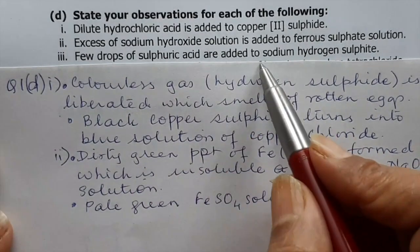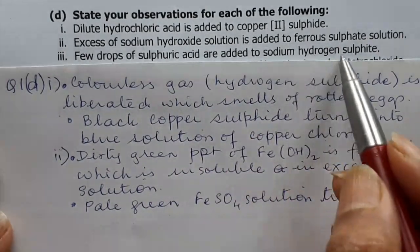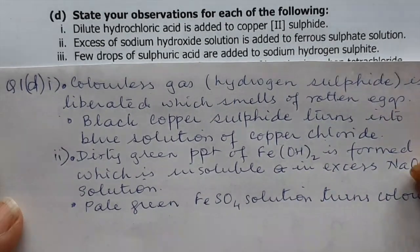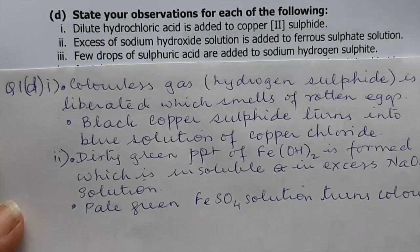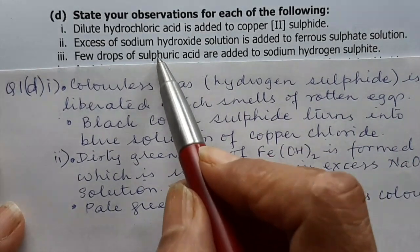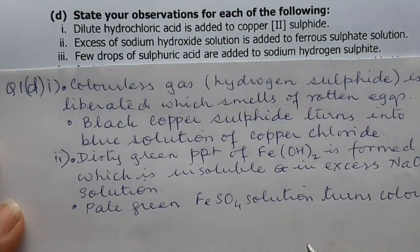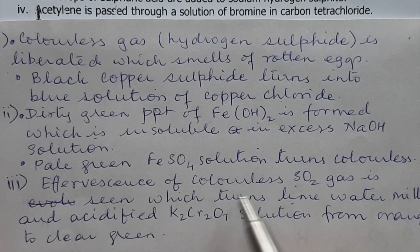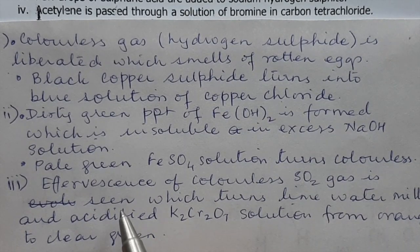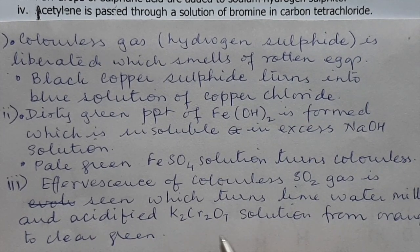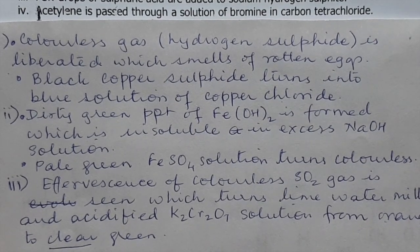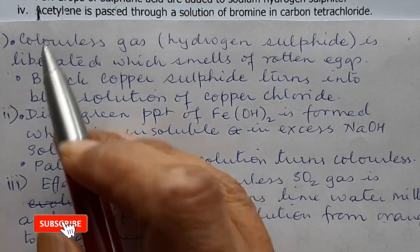(iii) A few drops of sulfuric acid are added slowly to sodium hydrogen sulfite: the HSO₃ radical with the acid produces sulfur dioxide gas. Write that effervescence of colourless SO₂ gas is seen, which turns lime water milky and turns acidified K₂Cr₂O₇ solution from orange to clear green.